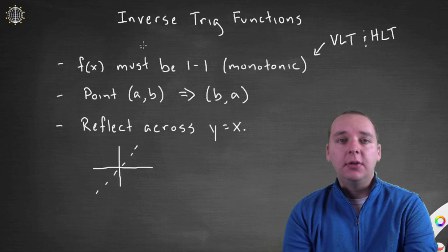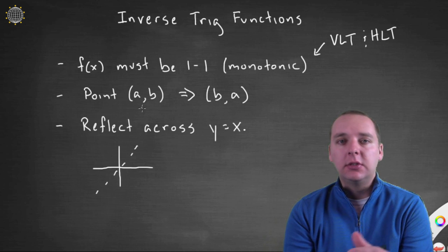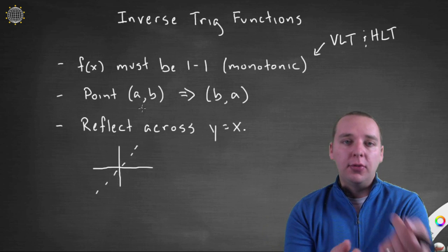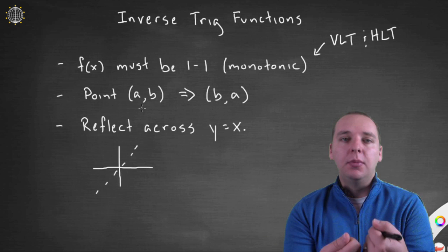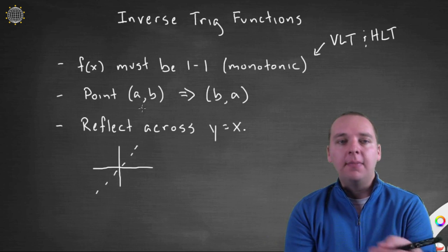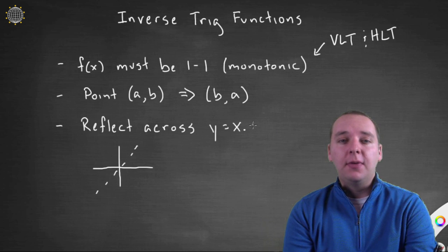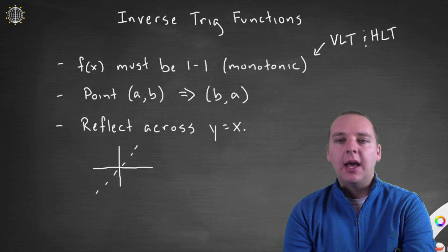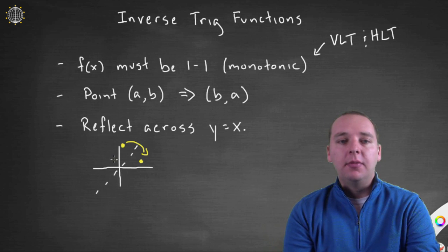Basically, what happens when you have an inverse relationship is the point (A, B) becomes the point (B, A). A simple example: 3 squared is 9, so the point (3, 9) is on x-squared's graph, but on the square root graph you'll have the point (9, 3). So (A, B) becomes (B, A) on the inverse graph. Graphically, you get the inverse by reflecting across the line y equals x, which switches A comma B for B comma A on a point-by-point basis.